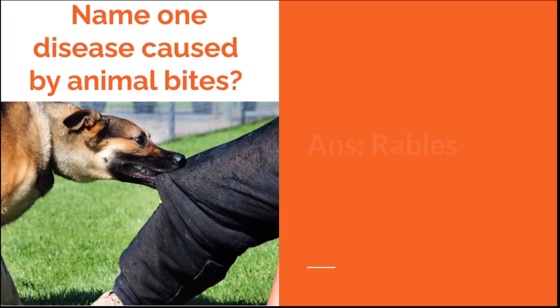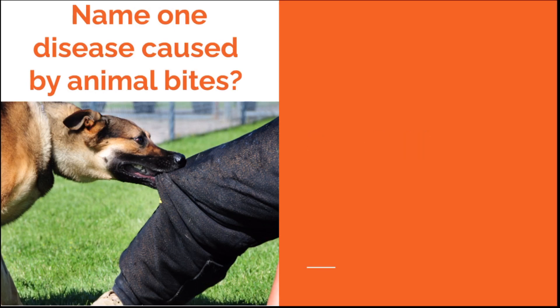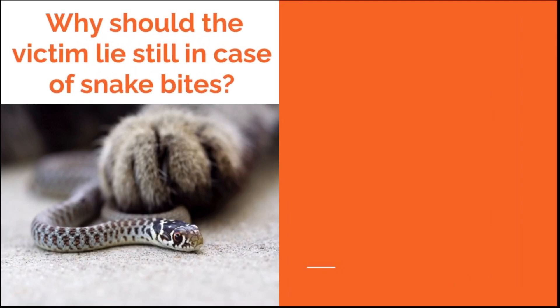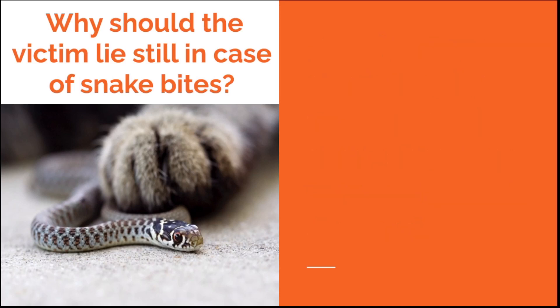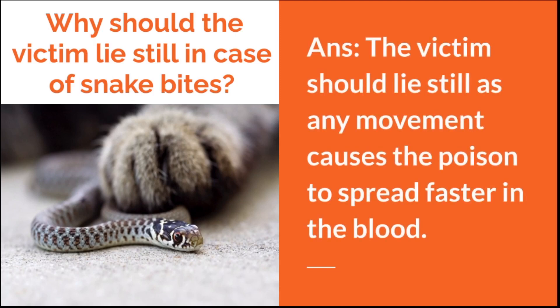Name one disease caused by animal bites. Answer: Rabies. Our next question is: Why should the victim lie still in case of snake bites? Answer: The victim should lie still as any movement causes the poison to spread faster in the blood.